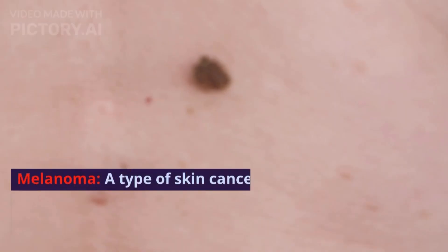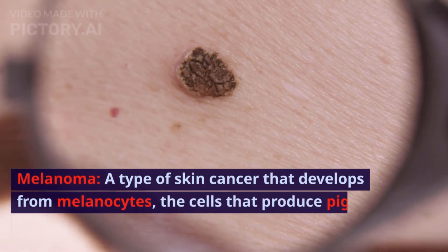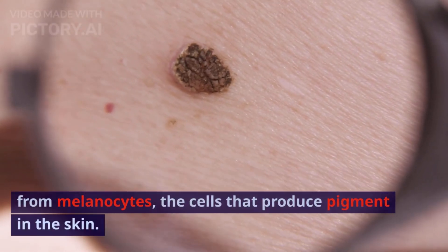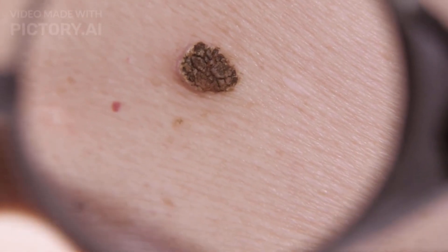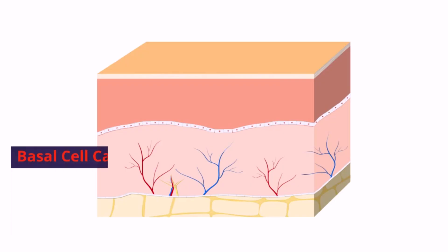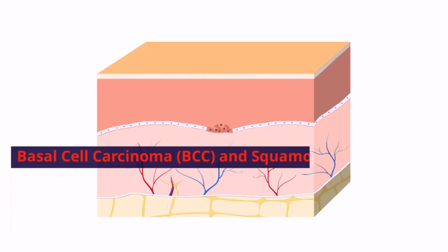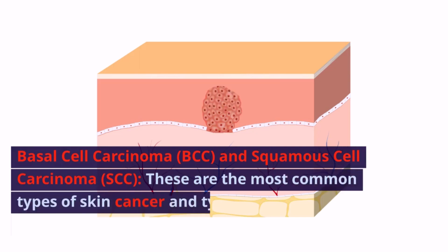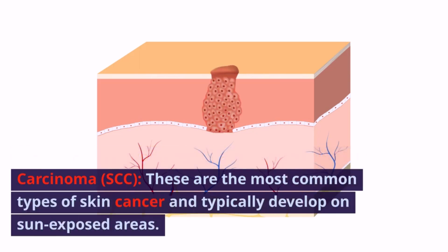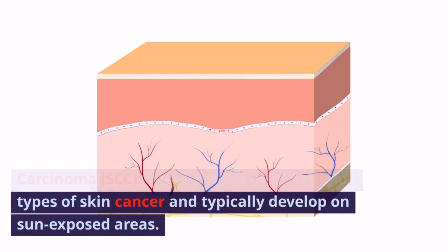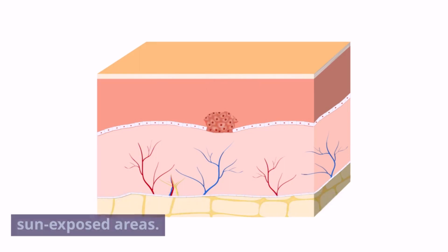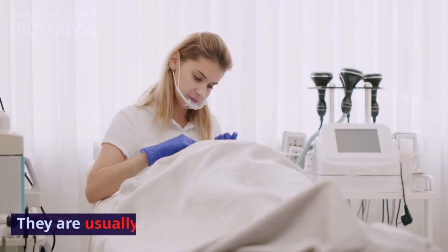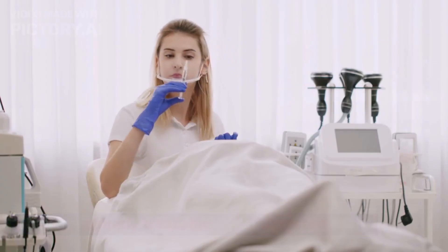Melanoma is a type of skin cancer that develops from melanocytes, the cells that produce pigment in the skin. It's essential to catch melanoma early for effective treatment. Basal cell carcinoma, BCC, and squamous cell carcinoma, SCC, are the most common types of skin cancer and typically develop on sun-exposed areas. They are usually treatable when detected early.